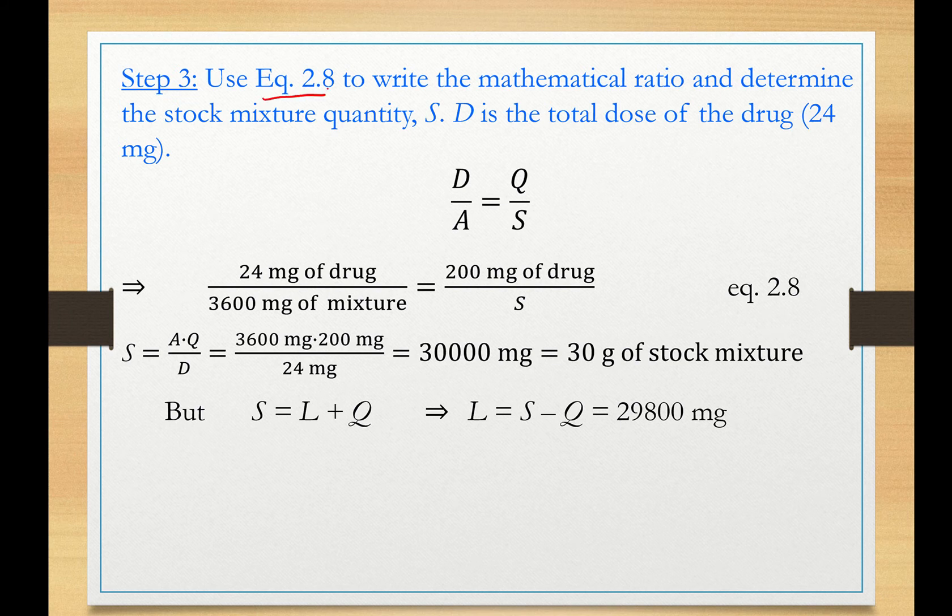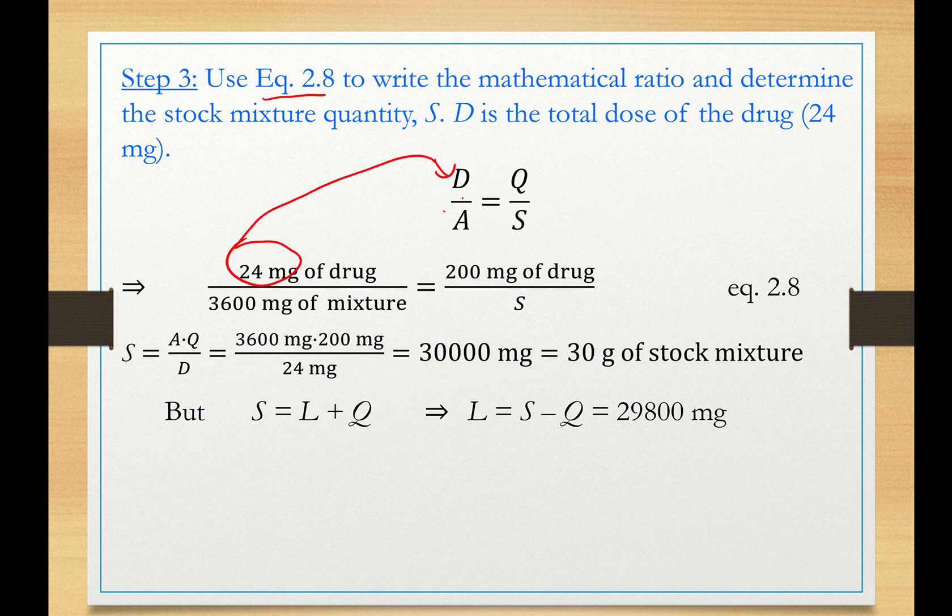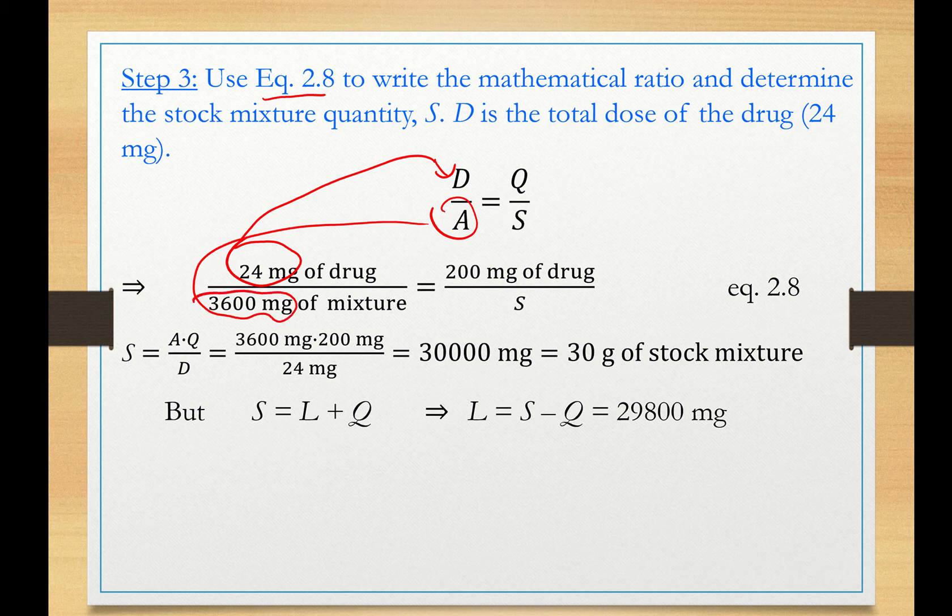So now we're ready to set up our ratio, our utility ratio, really. So what I have here is the 24 grams. My aliquot is the total powder mixture needed, the total mixture needed to fill the 12 capsules. This is my least allowable weight. And now I need to calculate S. So cross multiply and get S.